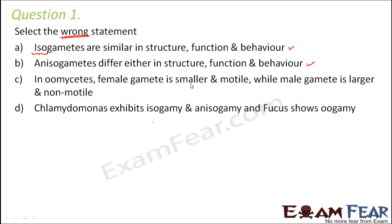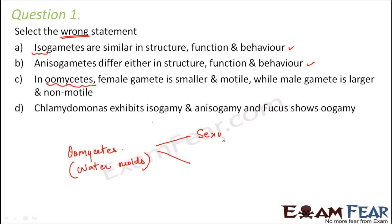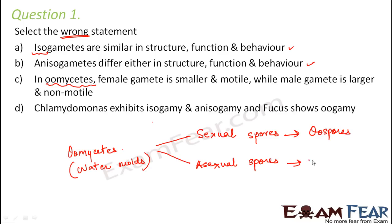Option three: in oomycetes, the female gamete is smaller and motile while the male gamete is larger and non-motile. Oomycetes are fungus-like eukaryotic organisms also known as water molds. Reproduction can happen by two ways — sexual reproduction with the help of oospores and asexual reproduction with the help of zoospores.